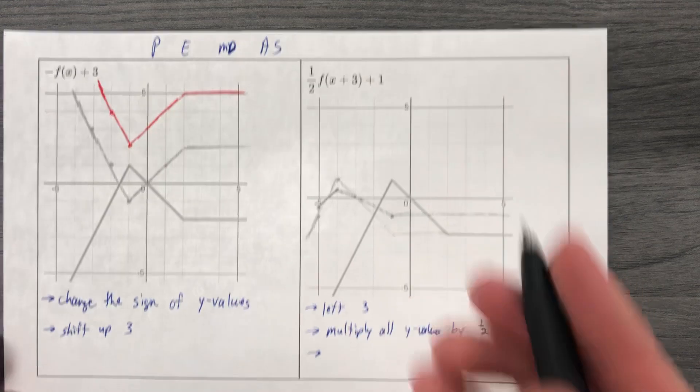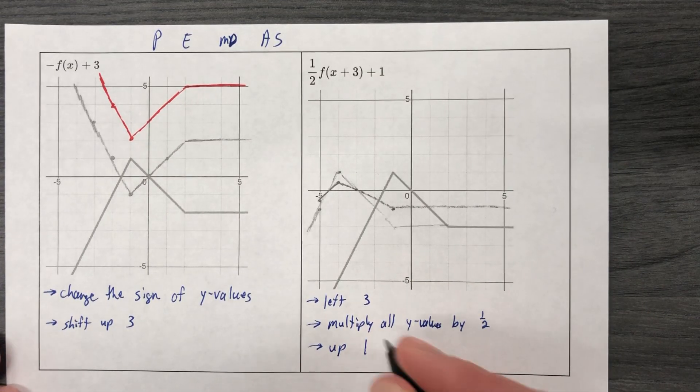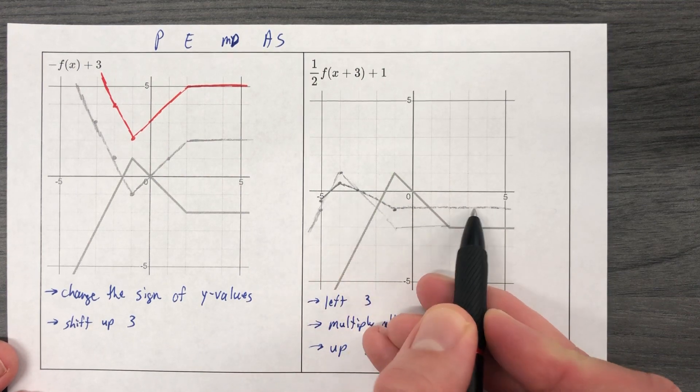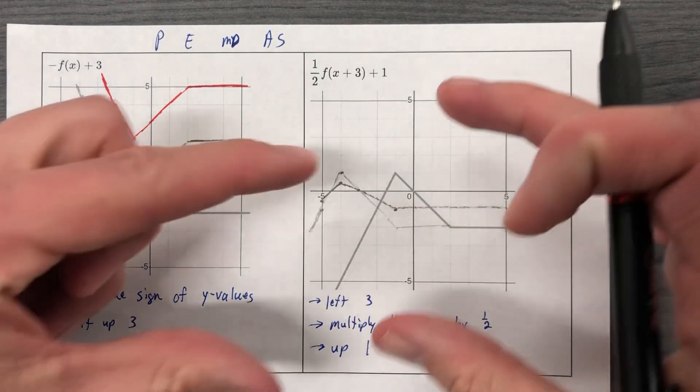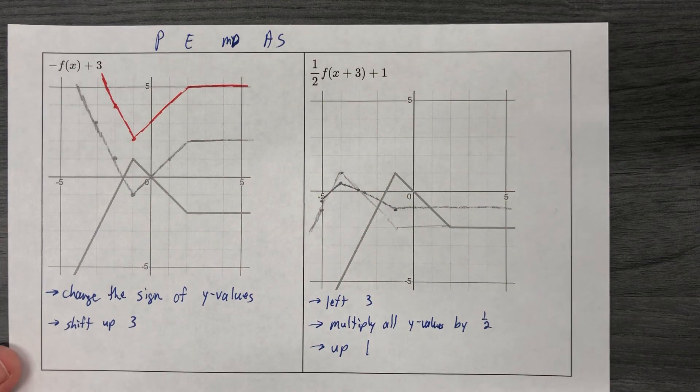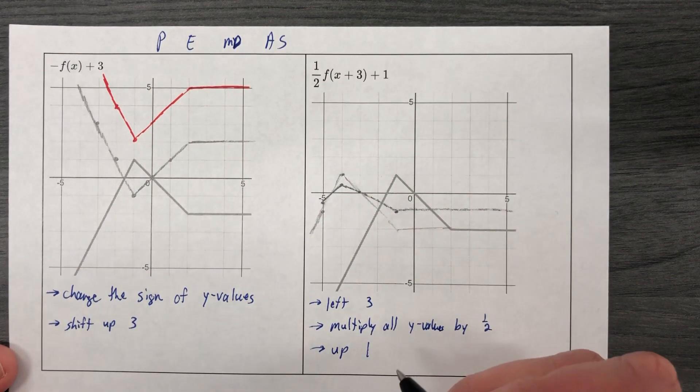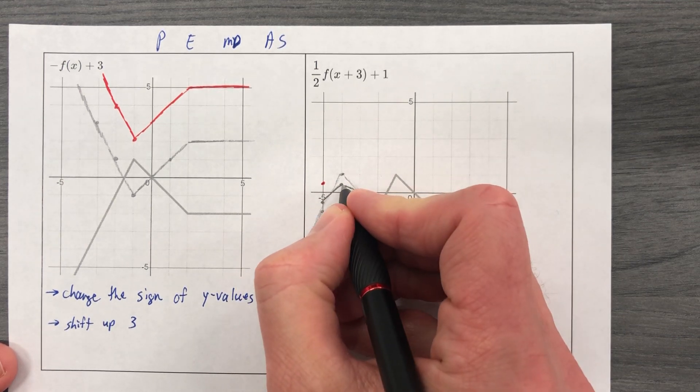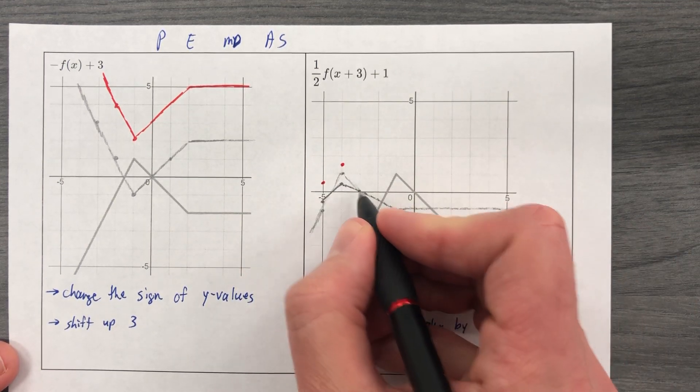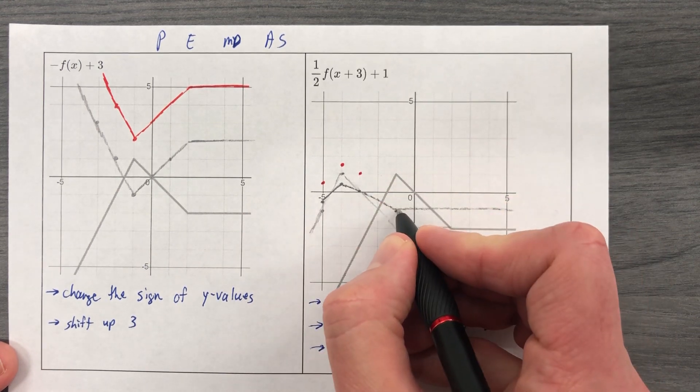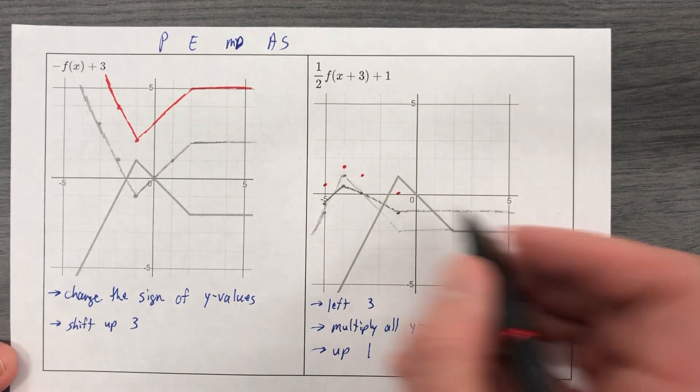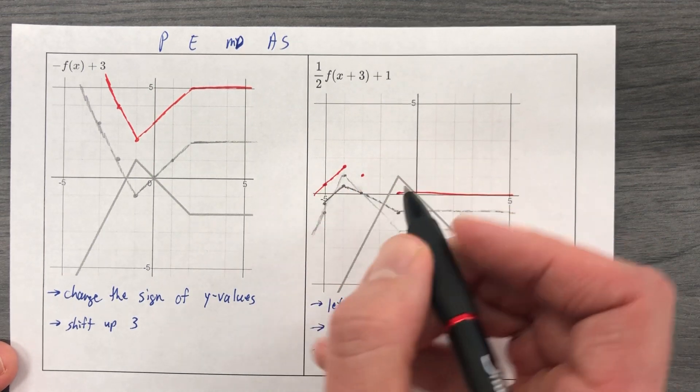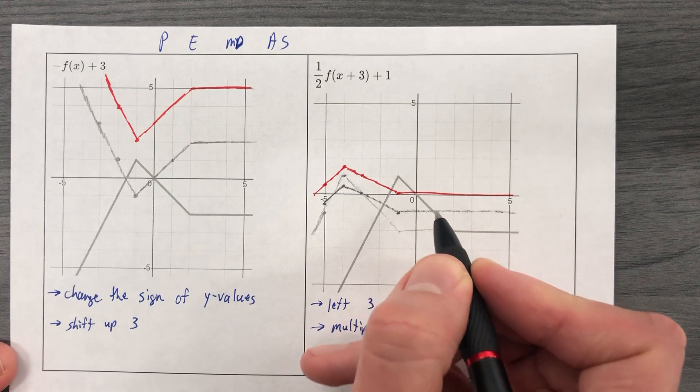Plus 1 is our addition and subtraction. So up 1. I'm going to put my final answer in red. So at this point, I'm on this little guy right here that got shifted over 3 and then squashed down to half of its height. And so we're going to take that whole thing and shift it all up 1. So this point goes up 1. This point goes up 1. This point goes up 1. That point goes up 1. That whole line goes up 1. There we go.